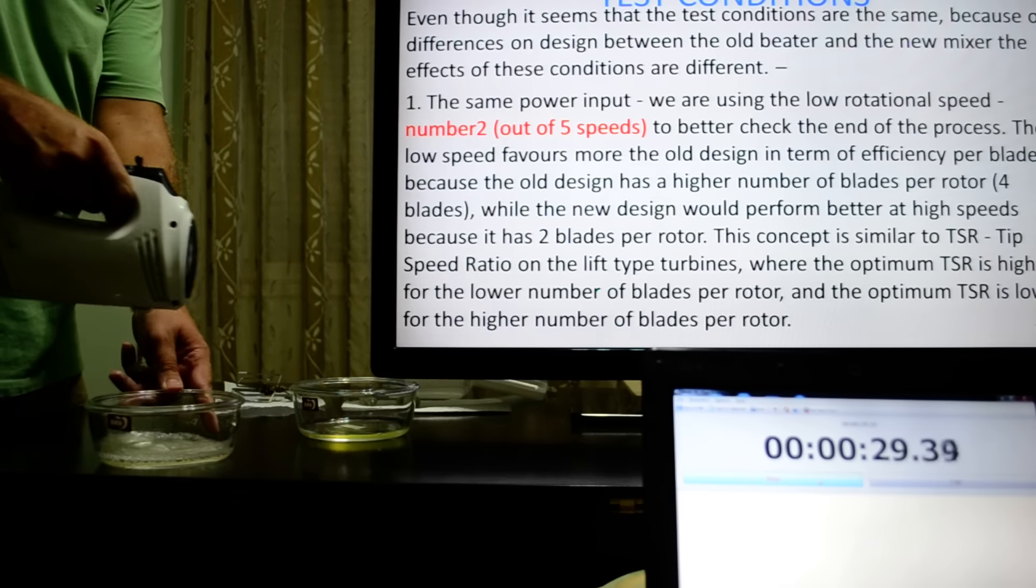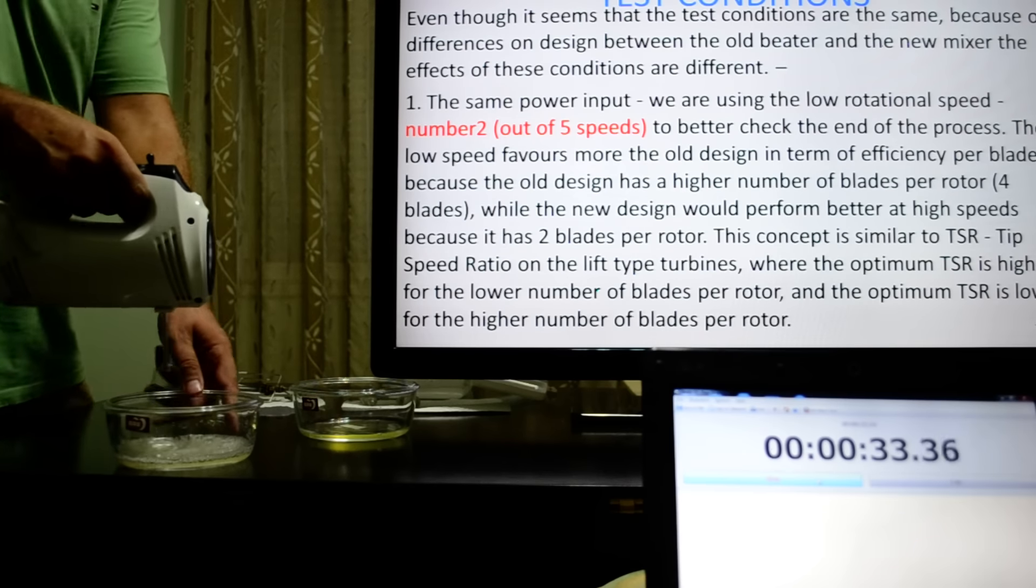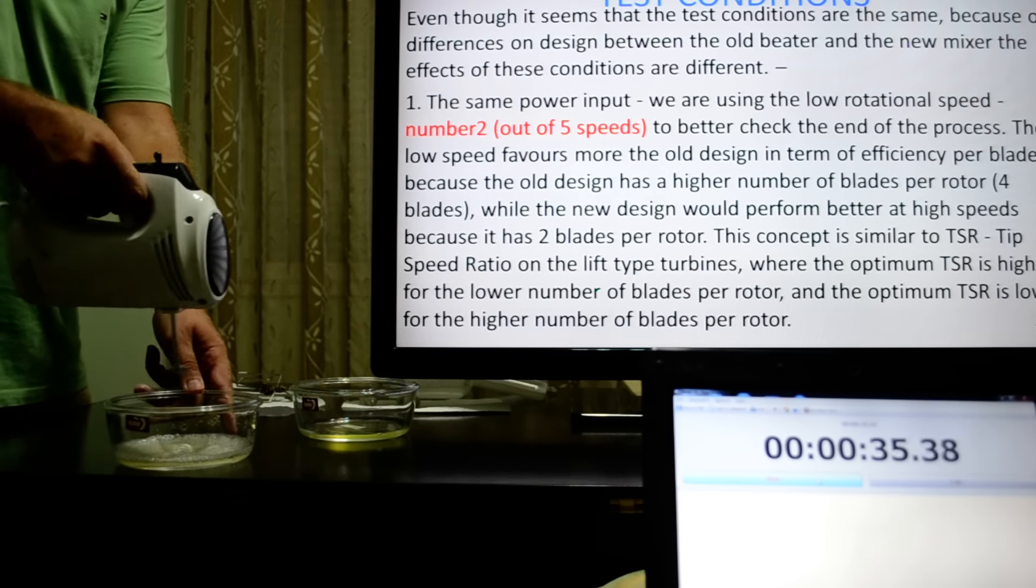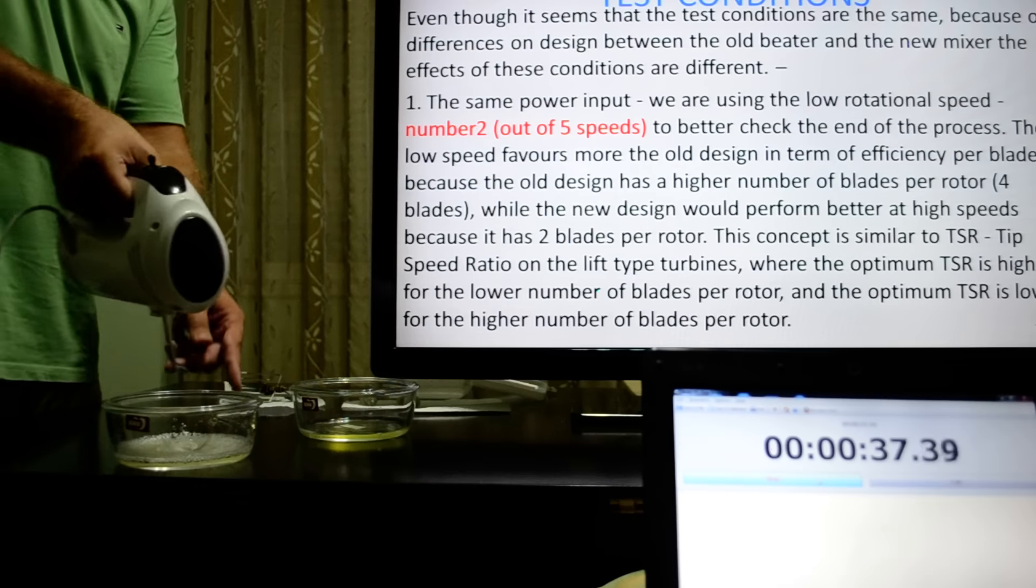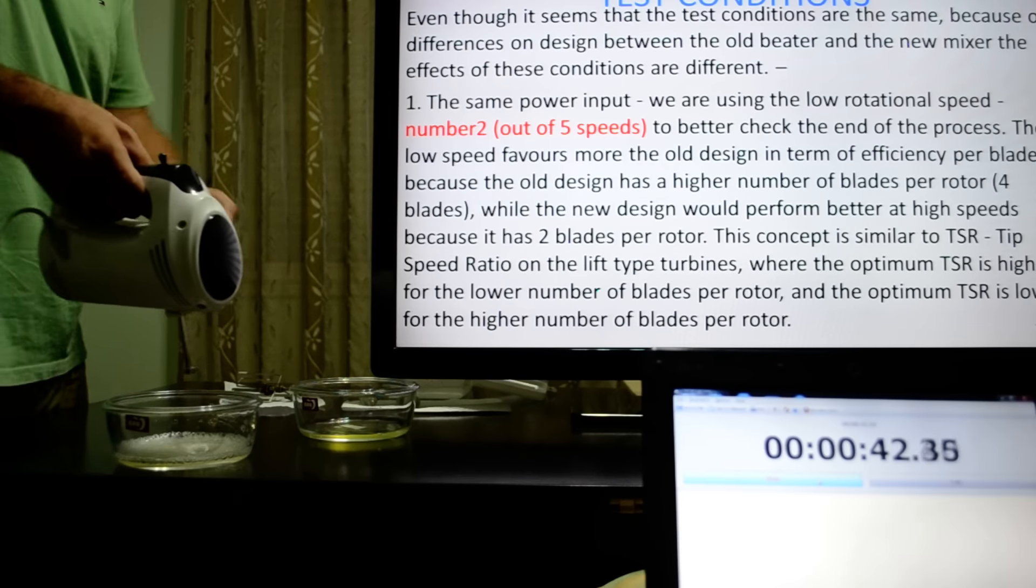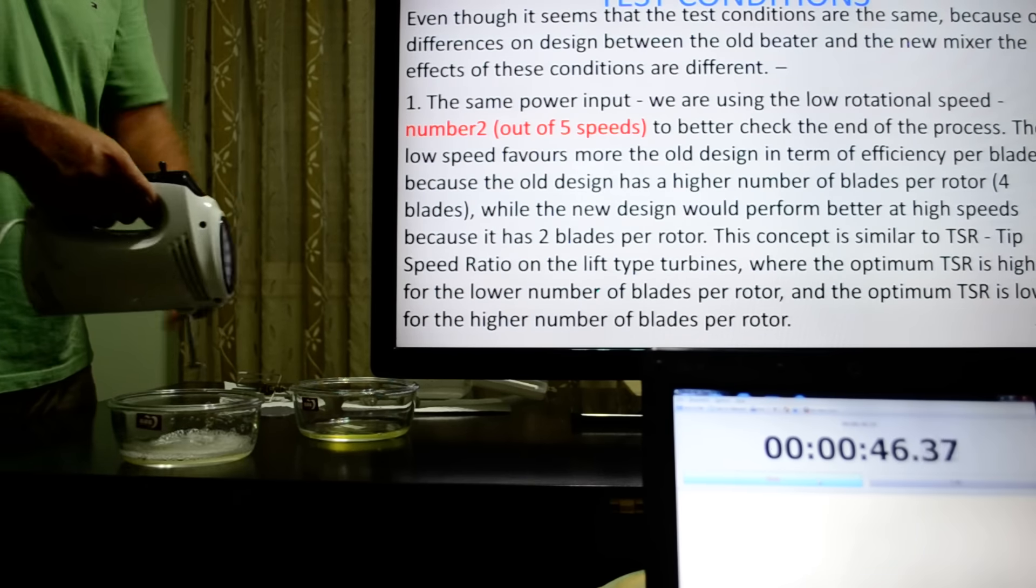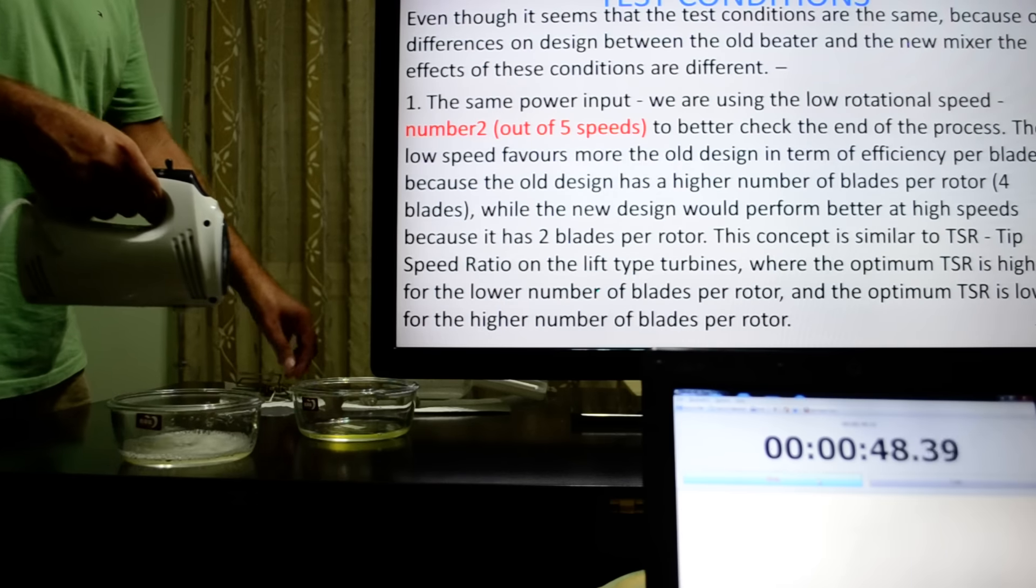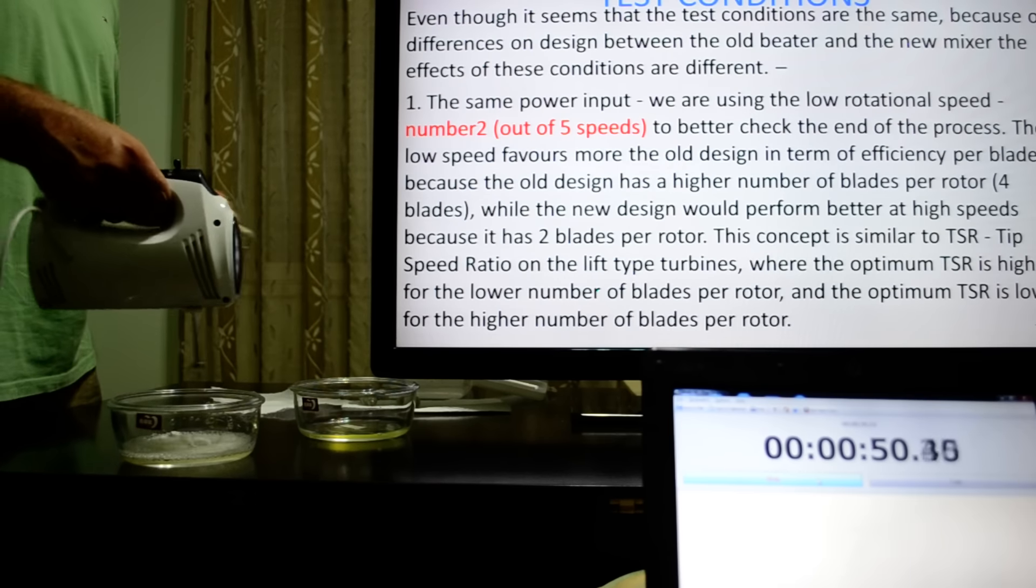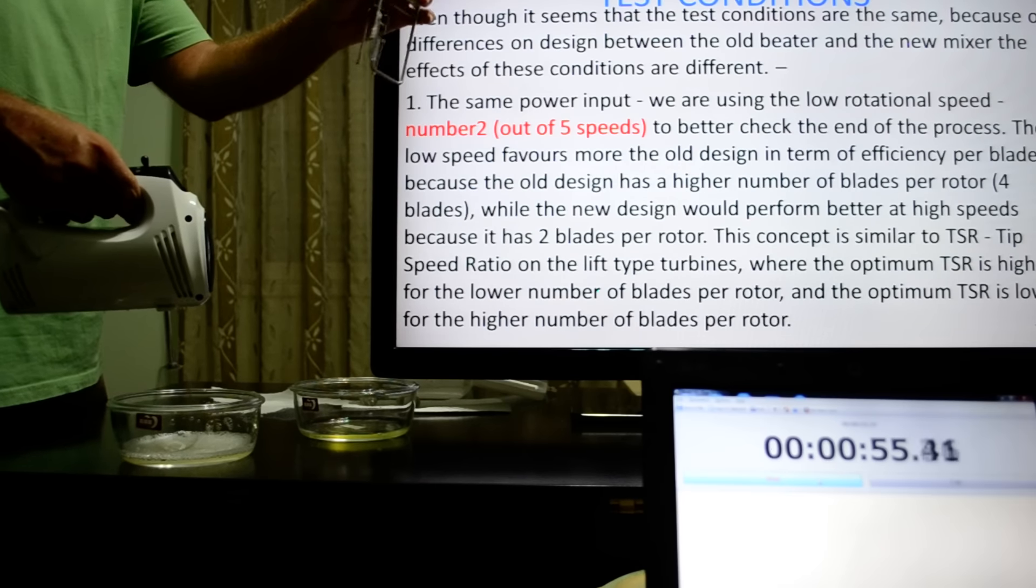Even though it seems that the test conditions are the same, because of the difference in design between the old mixer and the new mixer, the effects of these conditions are different. For example, the same power input: we're using the low rotation speed number two to better check the end of the process. The low speed favors more the old design in terms of efficiency per blade because the old design has higher number of blades per rotor, which is four blades, while the new design will perform better at high speeds because it has two blades per rotor.